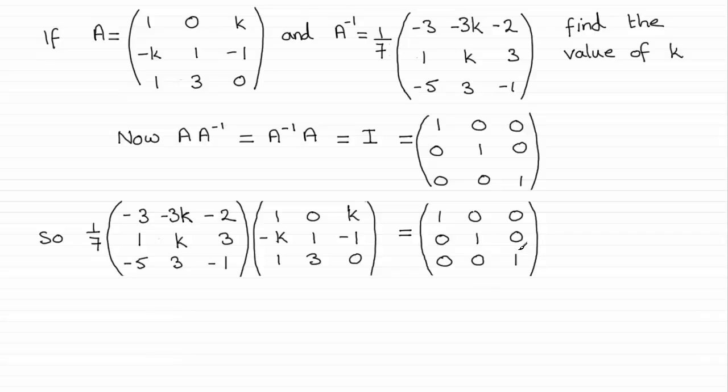And first of all I'd want to find some line and column that contains a k in it. And I might be tempted to go for this first line here with this column here. And if I was to carry out that multiplication, we would therefore have minus 3 times 1, that gives us minus 3, and then we've got minus 3k times the minus k there, that's going to be plus 3k squared, and then minus 2 times the 1 gives us minus 2. It's going to all be over 7.